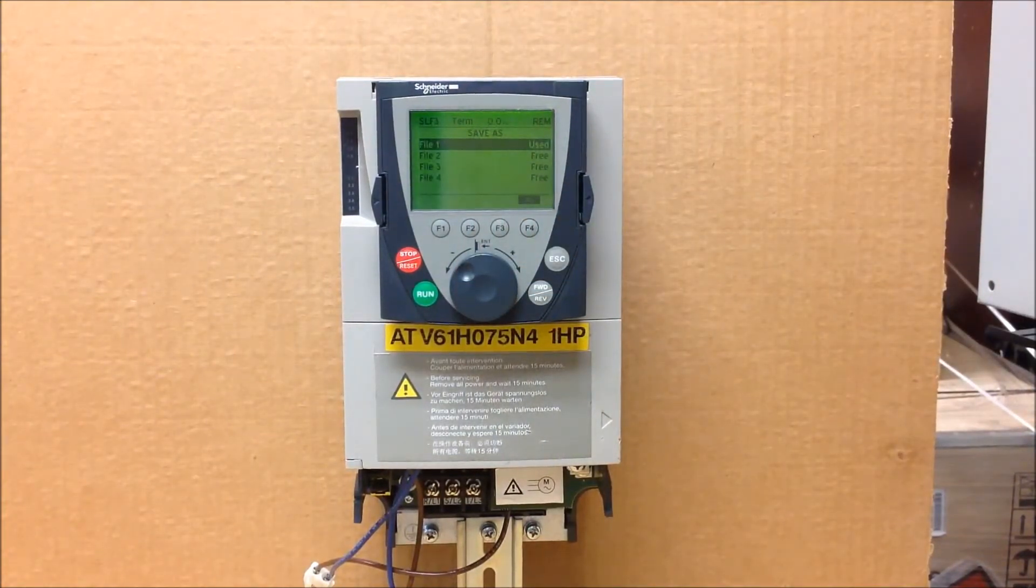Now you have four files to pick from. Some of them may be used already, the others may say free. And if it's a used file that means that someone has already come in here and saved the parameters to the keypad on file one already. So you can choose to pick another file if you like, or you can also choose to overwrite the existing file. No problem either way.